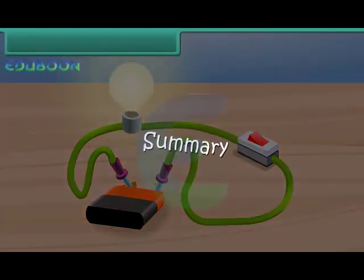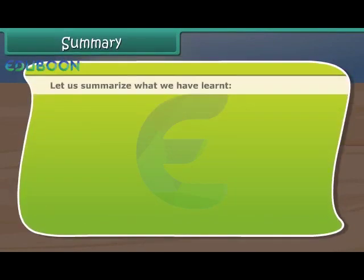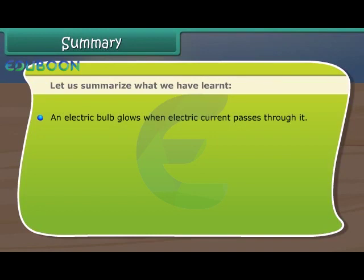Summary. Let us summarize what we have learned. An electric bulb glows when electric current passes through it.